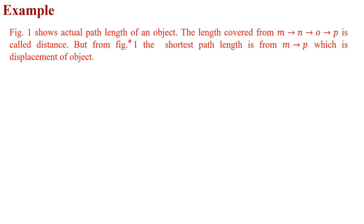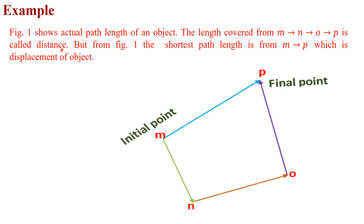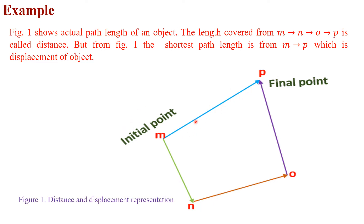Example: Figure 1 shows the actual path length of an object. The length covered from point M to N, then N to O, and then O to P is called distance. The initial point is M and the final point is P. From figure 1, the shortest path length from point M to point P is called the displacement of the object. This figure shows the distance and displacement representation.